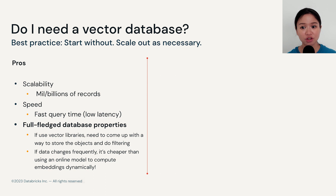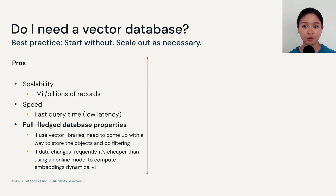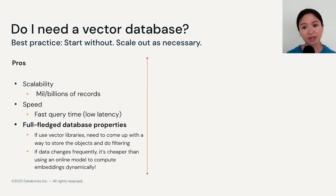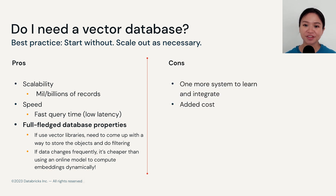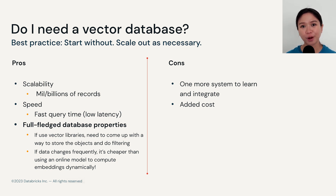But if your data changes quickly, it can be much cheaper to offline compute the embeddings first and then store them in a vector database for on-demand query later. This way, you can also avoid using an online model to dynamically compute the embeddings. Of course, unsurprisingly, the cons of adding a vector database to your architecture means you are going to pay for an additional service, and you do have one more system to learn, integrate, and maintain.